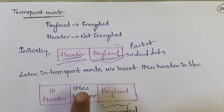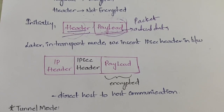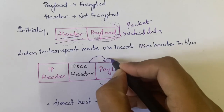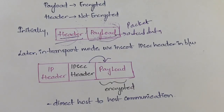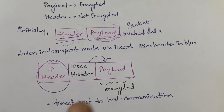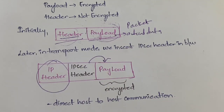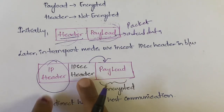So we insert the IP security header in between. What this IP security header does is it encrypts whatever data is present after it. Whatever data is present before the IP security header, it will not affect that data. That is why the IP header is not encrypted, but the payload is encrypted since the payload is placed after the IP security header.